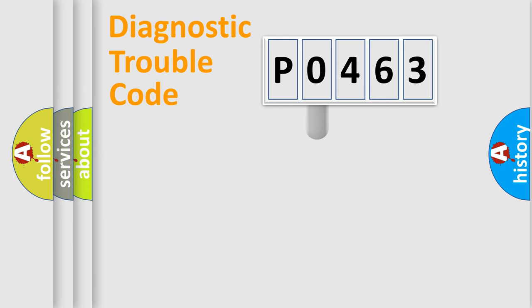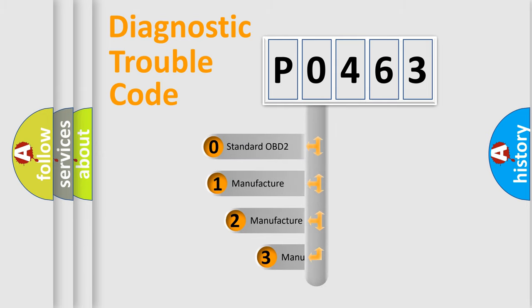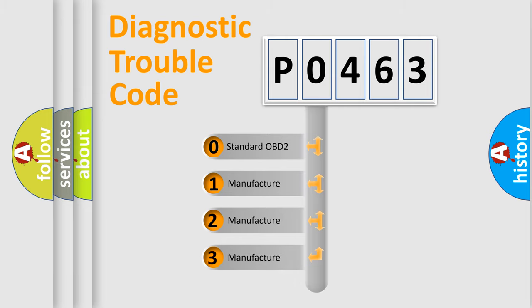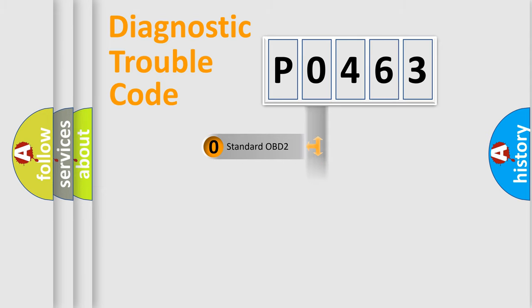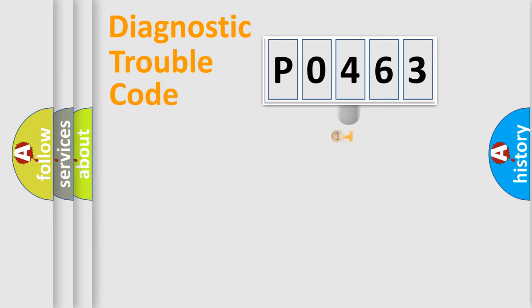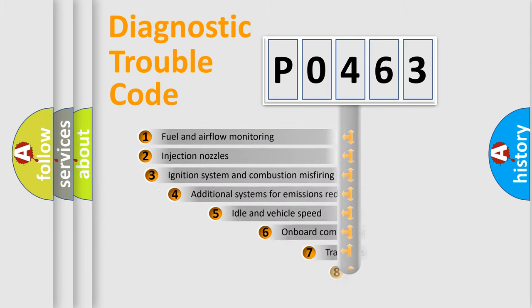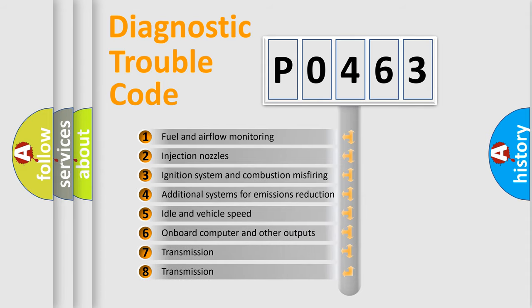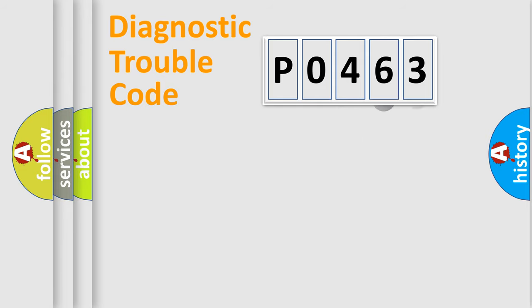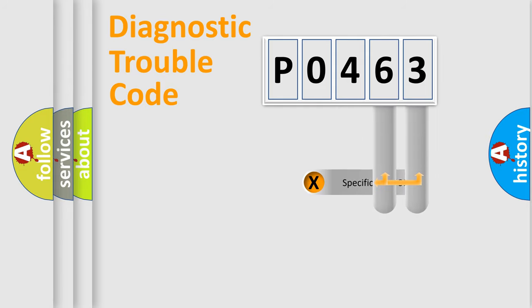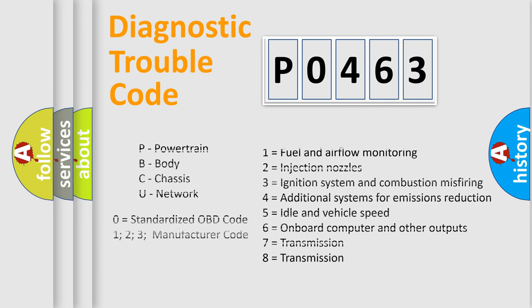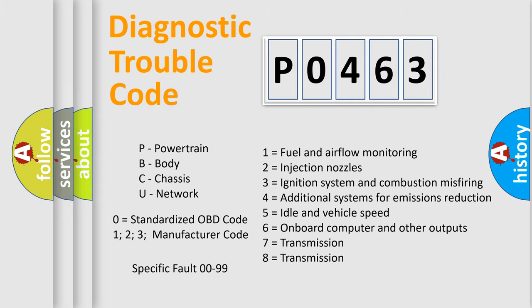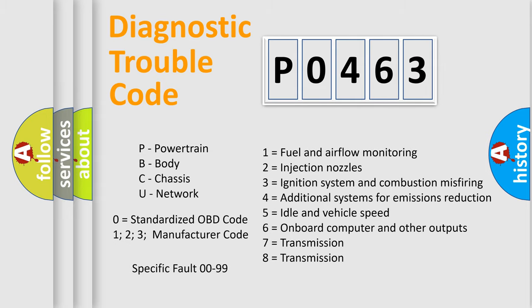This distribution is defined in the first character of the code. If the second character is expressed as zero, it is a standardized error. In the case of numbers 1, 2, or 3, it is a manufacturer-specific error. The third character specifies a subset of errors. This distribution is valid only for the standardized DTC code. Only the last two characters define the specific fault of the group, and this division is valid only if the second character is expressed by the number zero.